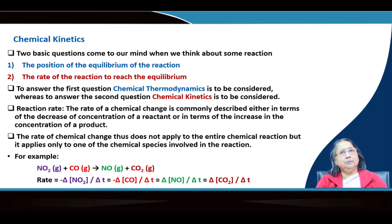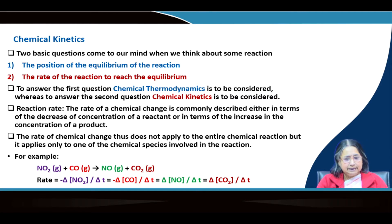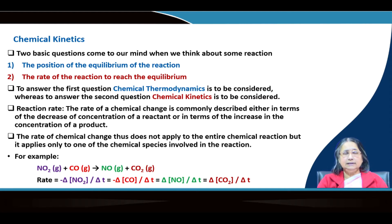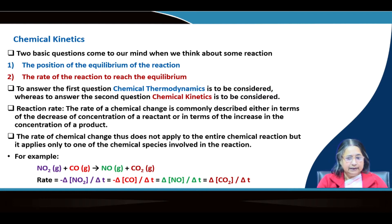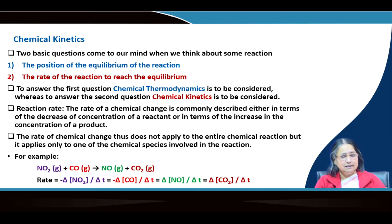Two basic questions come to mind when we see a reaction. The first is the position of the equilibrium — that is, how far the reaction will go. This is already covered in chemical equilibrium. The second question is the rate of the reaction. When we talk about chemical equilibrium we never discuss the speed of the reaction — whether it will be fast or slow — and that is handled in chemical kinetics. To answer the first question chemical thermodynamics is important, and to answer the second question chemical kinetics is important.